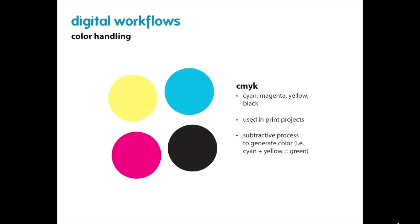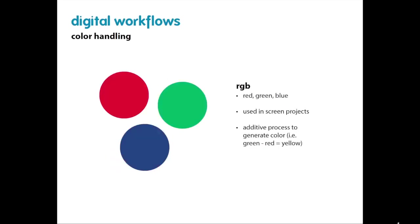CMYK stands for cyan, magenta, yellow, and black — used primarily in print projects. RGB stands for red, green, blue — used primarily for screen projects. If it lives on the web, in email, or won't be printed, just stick with RGB.